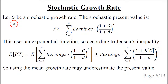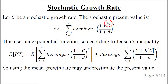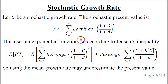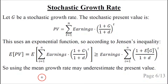Now let capital G be a stochastic growth rate. The present value is defined by taking a starting earning with a stochastic growth rate capital G. This is an exponential function because it is raised to the power of T. According to Jensen's inequality, we know that the mean present value is greater than or equal to the estimate from using the mean growth rate. In other words, using the mean growth rate underestimates the present value.